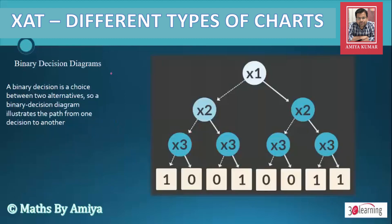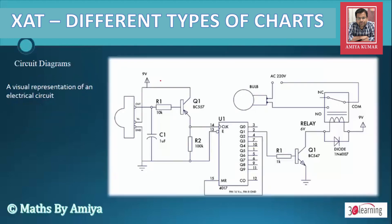Next is the Binary Decision Diagram — one of the most important diagrams that might appear in the JAT. We have discussed a question on the binary decision diagram; please find that video on our YouTube channel.